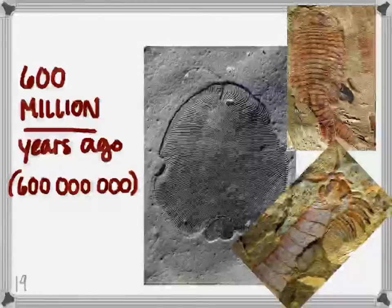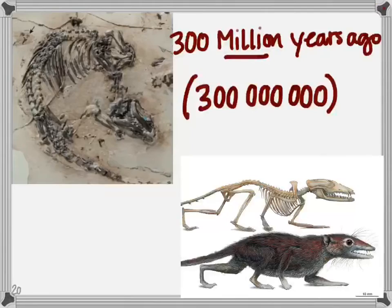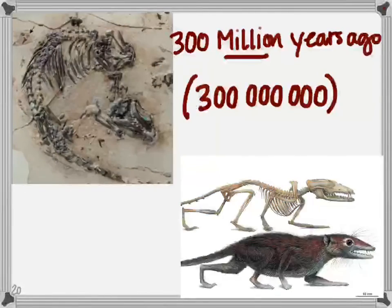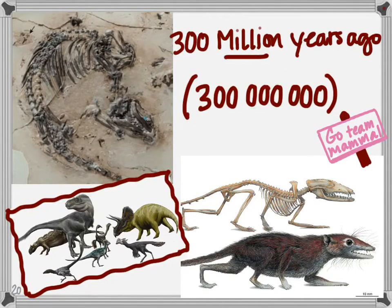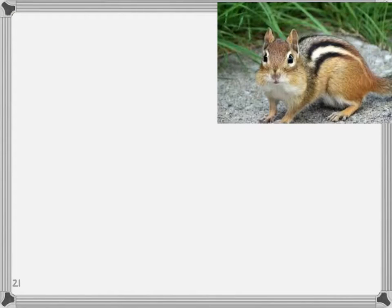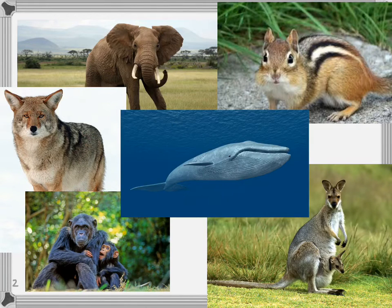We don't see any direct fossil evidence of animals until 600 million years ago, and they sure don't look like anything we'd think of as an animal. The first mammals that show up in the fossil record look a lot like modern rodents. They're very small and they show up 300 million years ago. They were actually living at the same time as the dinosaurs. We can trace a modern species — all mammals — back to that very first mammal species.